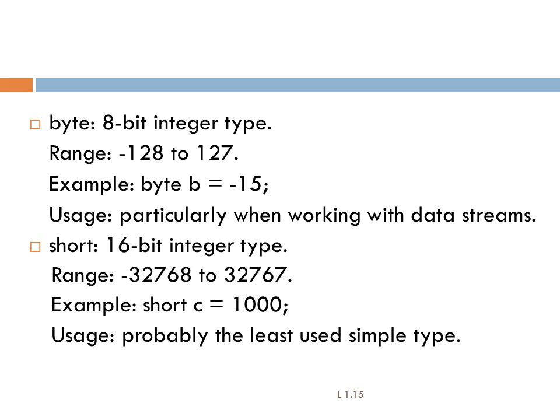Short takes a 16-bit integer type. The range of values is minus 32,768 to 32,767. A variable is declared as: short c = some value. For representing simple numbers, we use this data type.